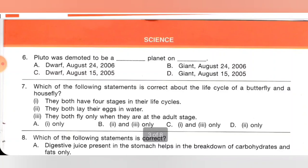Sixth one: Pluto was demoted to be a dash planet on dash. Option A: dwarf, August 24, 2006. B: giant, August 24, 2006. C: dwarf, August 15, 2005. D: giant, August 15, 2005. Pluto was demoted to be a dwarf planet on August 24, 2006. Option A is the correct answer.